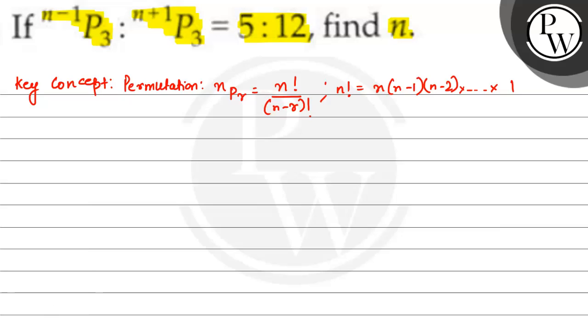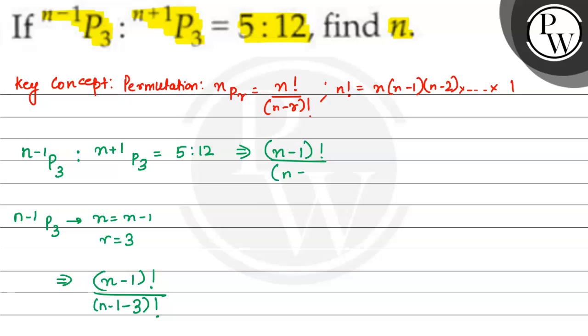This question says n minus 1 P3 is to n plus 1 P3 is 5 is to 12. Now, first of all, n minus 1 P3 equals n minus 1 factorial upon n minus r factorial. So n minus r whole factorial, this means n minus 1 factorial upon n minus 4 factorial. What is n minus 1 P3?